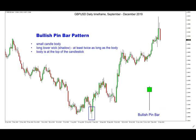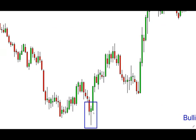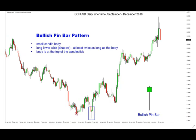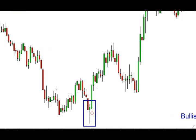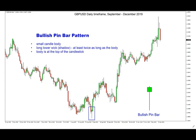Going back to the bullish version, let's see this real world example on the GBPUSD daily chart. Here we have a nice pin bar pattern which appeared right at a relatively important support area, confirmed the support, and that was followed by a nice bullish trend which started with this pattern — also a reversal, as we had a downtrend previously.